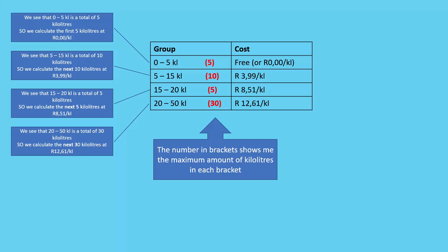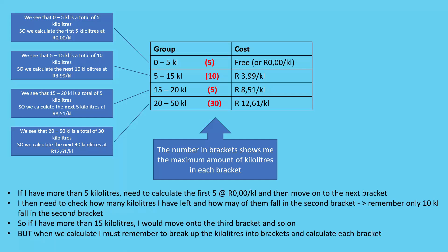If you have more than five kilolitres, calculate the first bracket first, then move to the next. Check how many kilolitres remain and how many fall into the next bracket. For example, if using 12 kilolitres, it extends into the second bracket. If using more than 15 kilolitres, move to the third bracket, and so on. The key is to break the total usage into these brackets and calculate each one separately before combining them for the total.